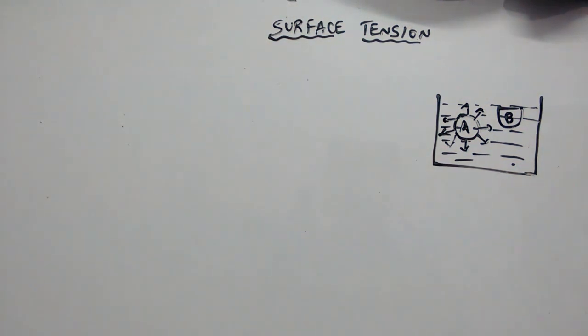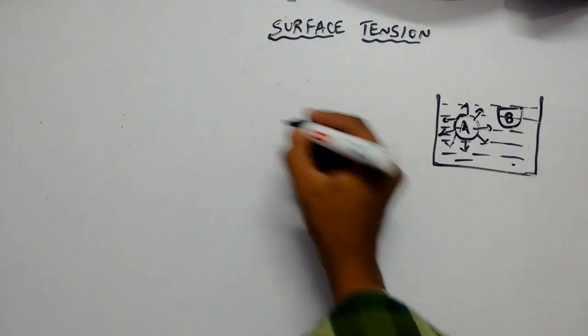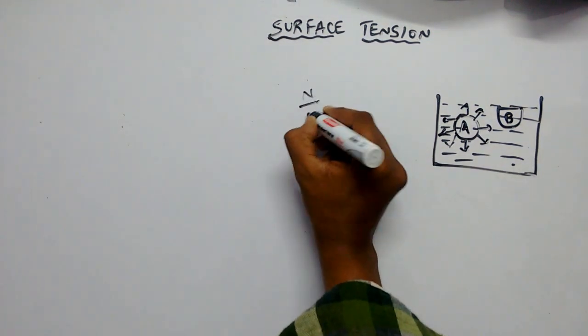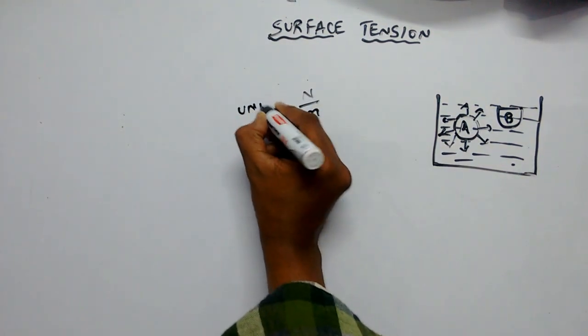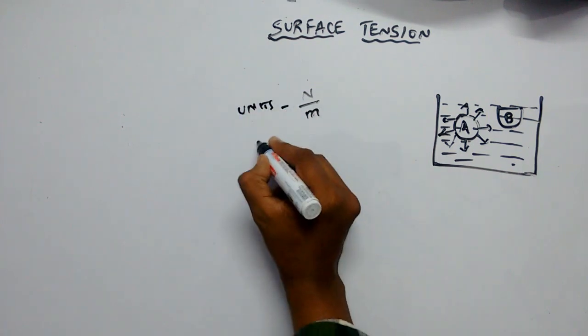Therefore, we can conclude that surface tension is a property of the liquid and is defined as force per unit length. That is Newton per meter are the units and it is represented by sigma.